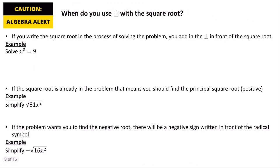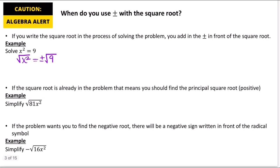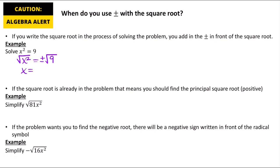So when do you use plus or minus with a square root? This is a commonly asked question, because sometimes we use the plus or minus and sometimes we just take the square root. If you are writing the square root sign in the process of solving the problem, you have to add in the plus or minus in front. For example, if we are solving x squared equals 9, we take the square root of both sides, and that's going to be plus or minus the square root of 9, giving us x equals plus or minus 3.